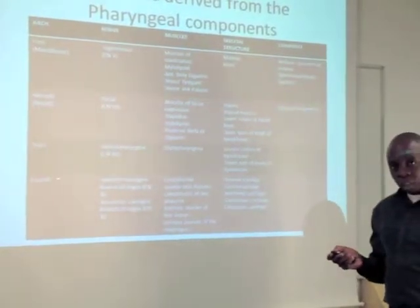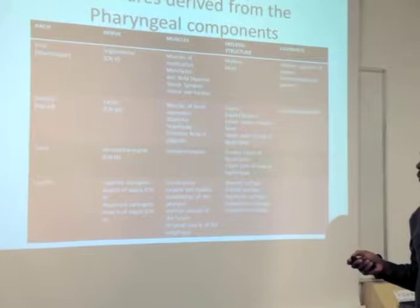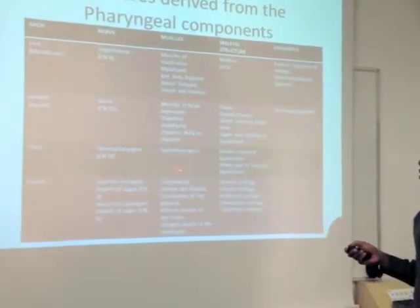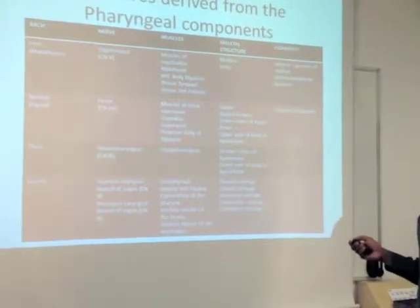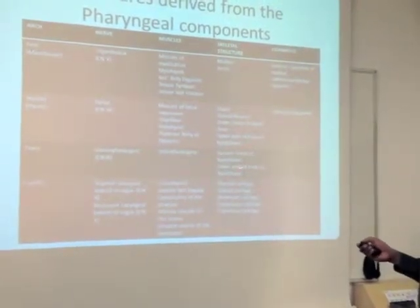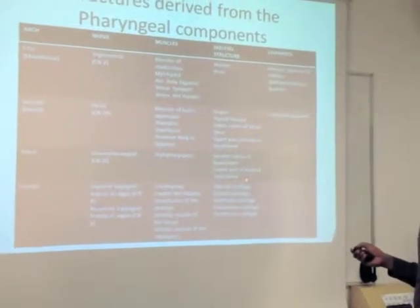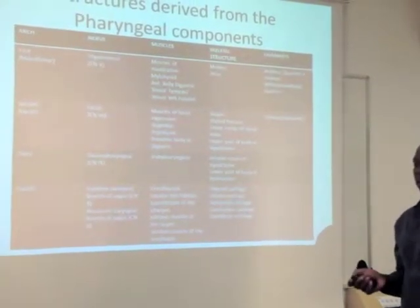Coming to the third arch, the third arch is glossopharyngeal nerve. The glossopharyngeal nerve doesn't do much, it's just the stylopharyngeus. It's going to supply the greater cornu of the hyoid bone, and it's also going to give off the lower part of the hyoid bone. So this is the bottom half.